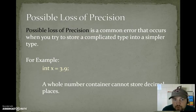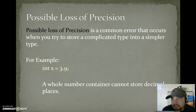Possible loss of precision. This is a common error that occurs when you try to store a complicated type into a simpler type. For example, ints can only hold whole numbers. Decimal points are more complicated than what an int can store. So if you said int x equals 3.9, you would get an error. A whole number container cannot store decimal places. The error you would actually get is possible loss of precision.